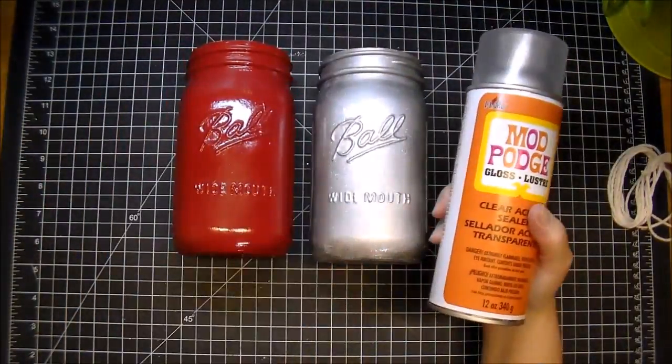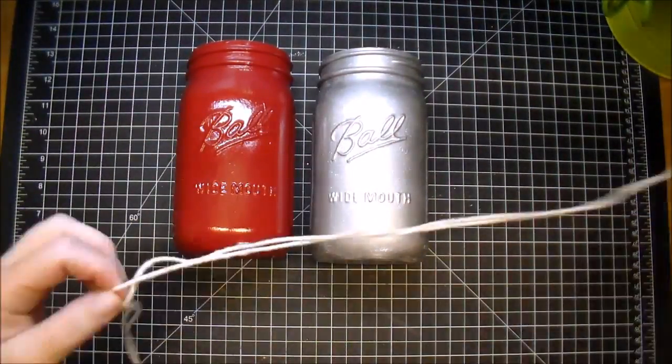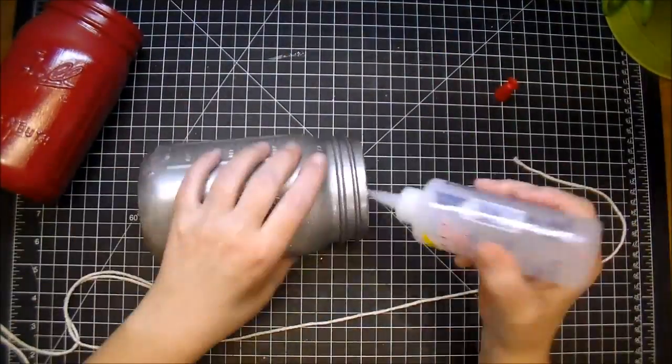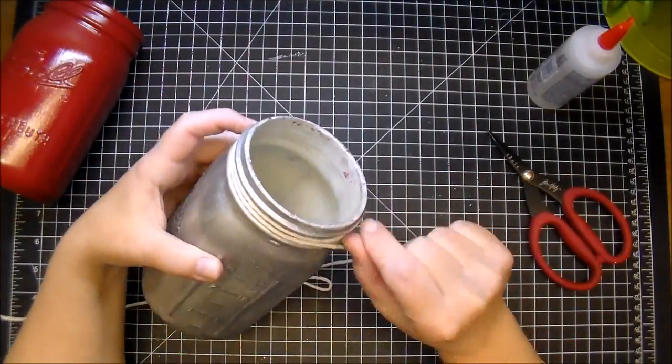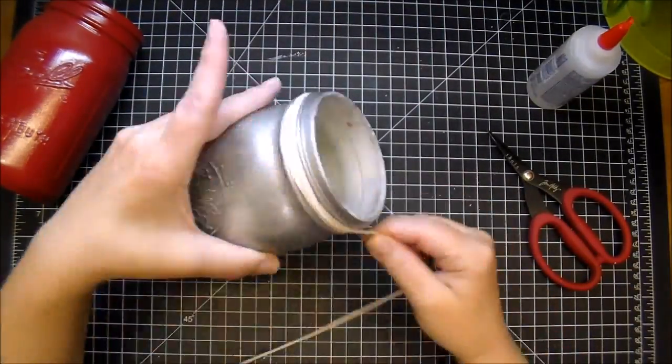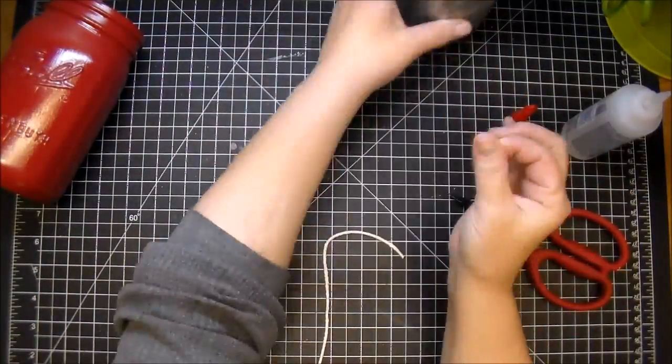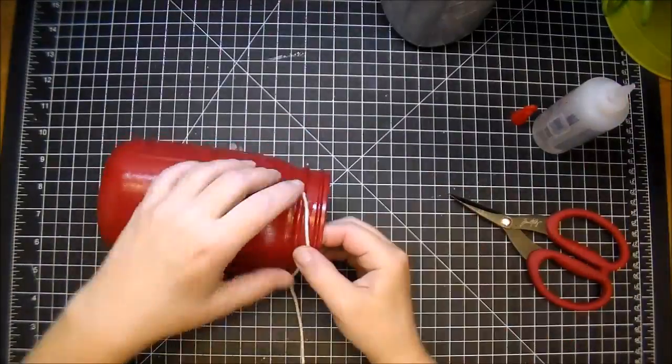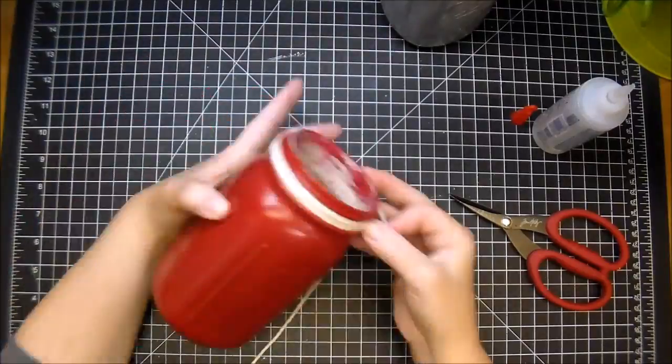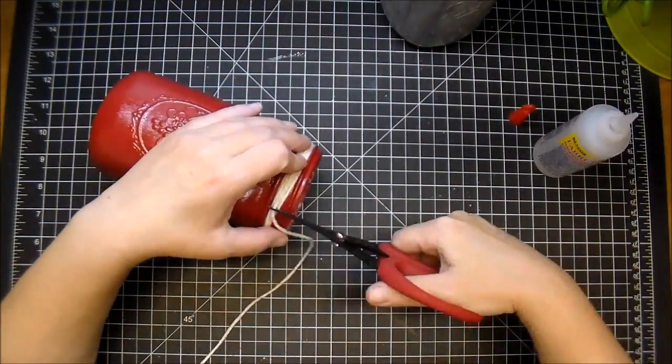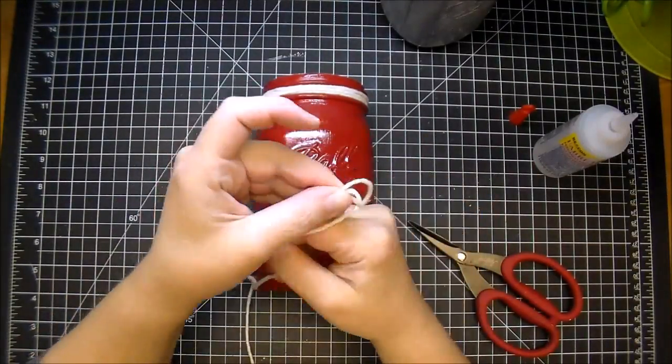Now I took the mason jars and sprayed them with some Mod Podge Clear spray. Now I'm using some twine that I had in my stash along with the Fabri-Tac and wrapping that around several times. And then I'm going to add bows to the front. I'm just tying the bows separate and then adding them on top.